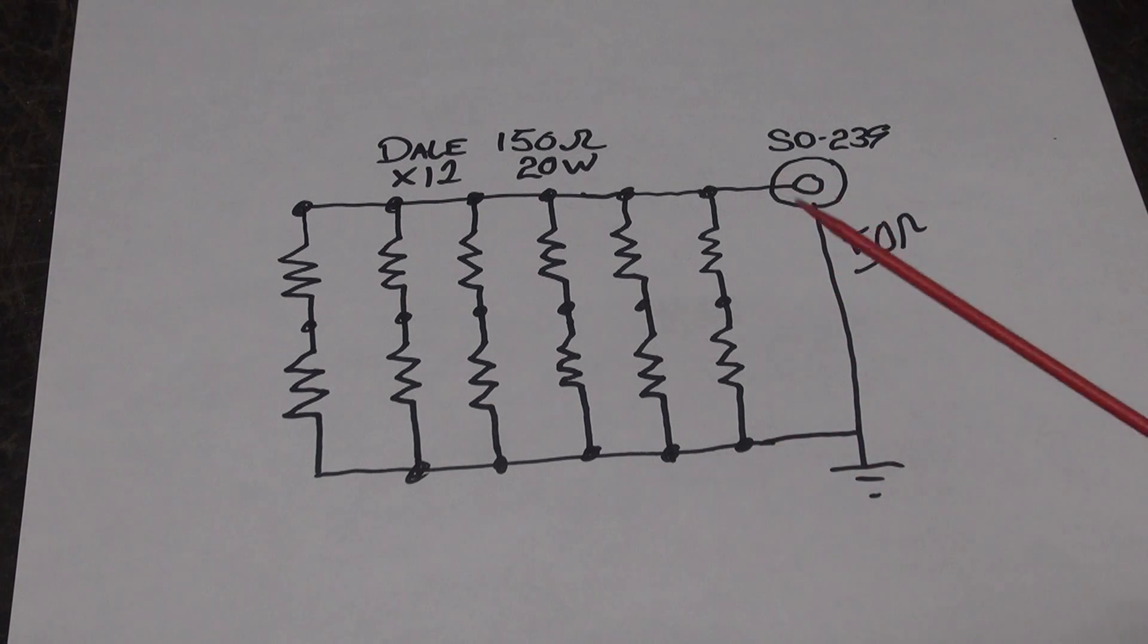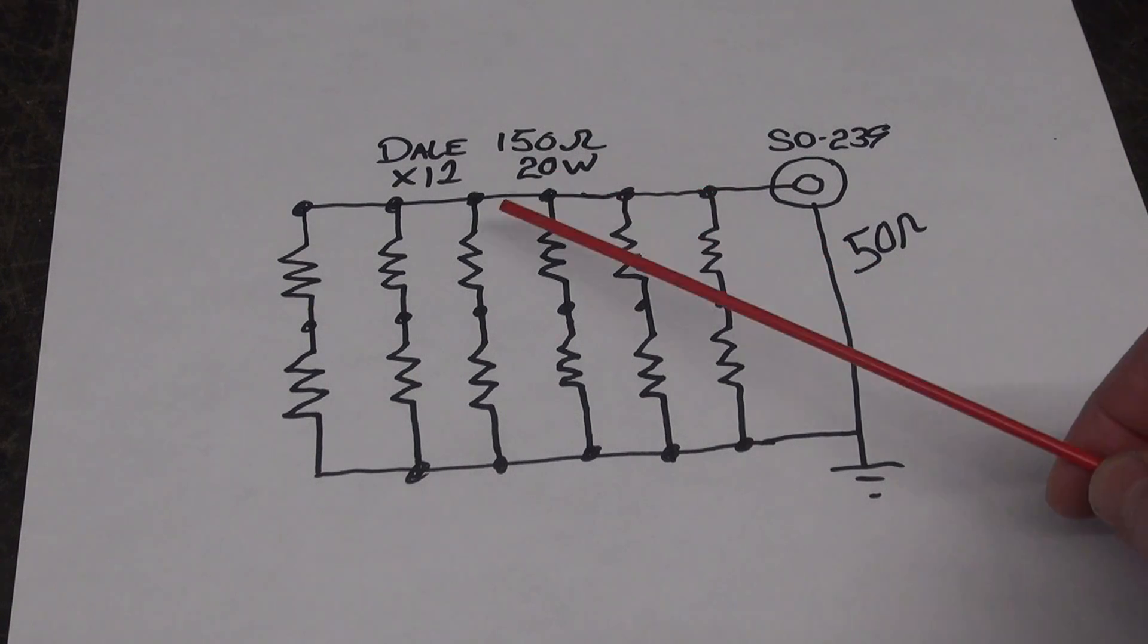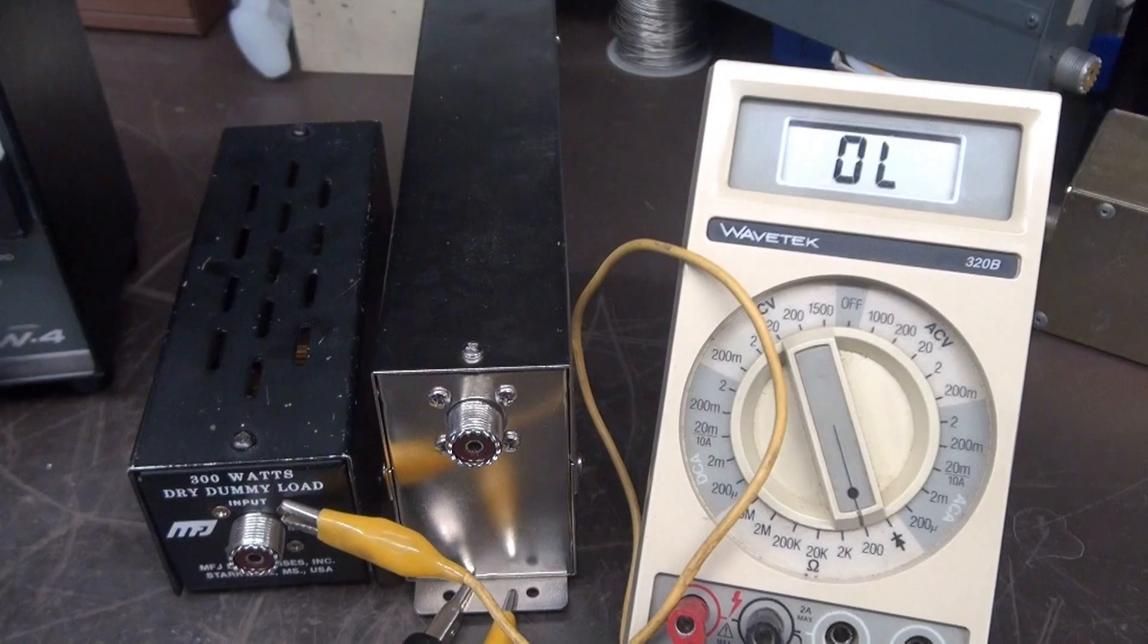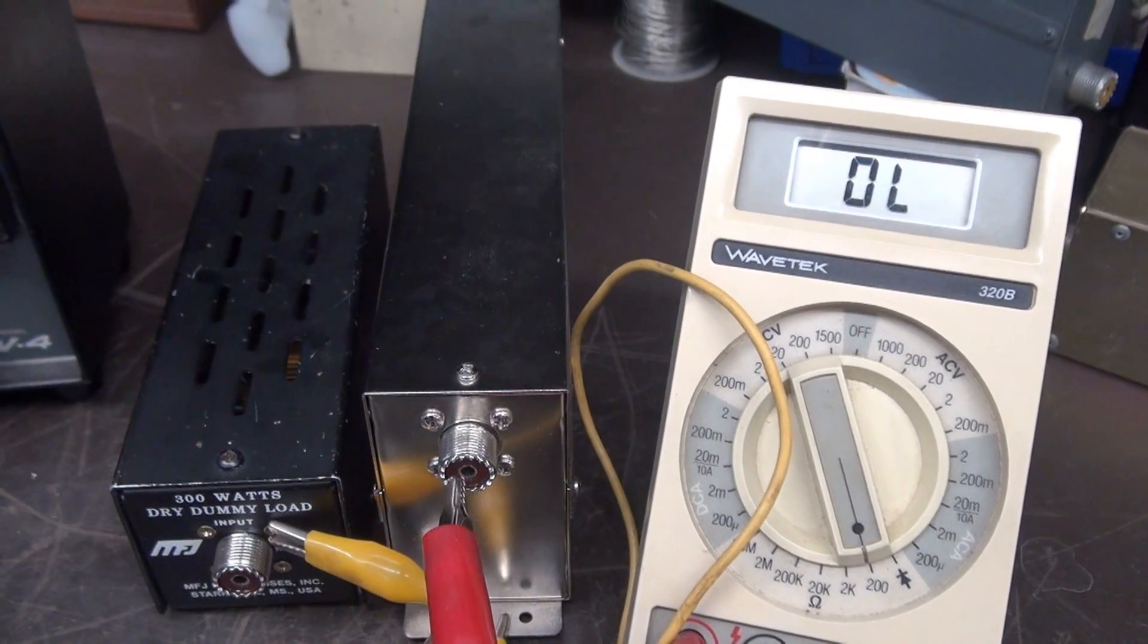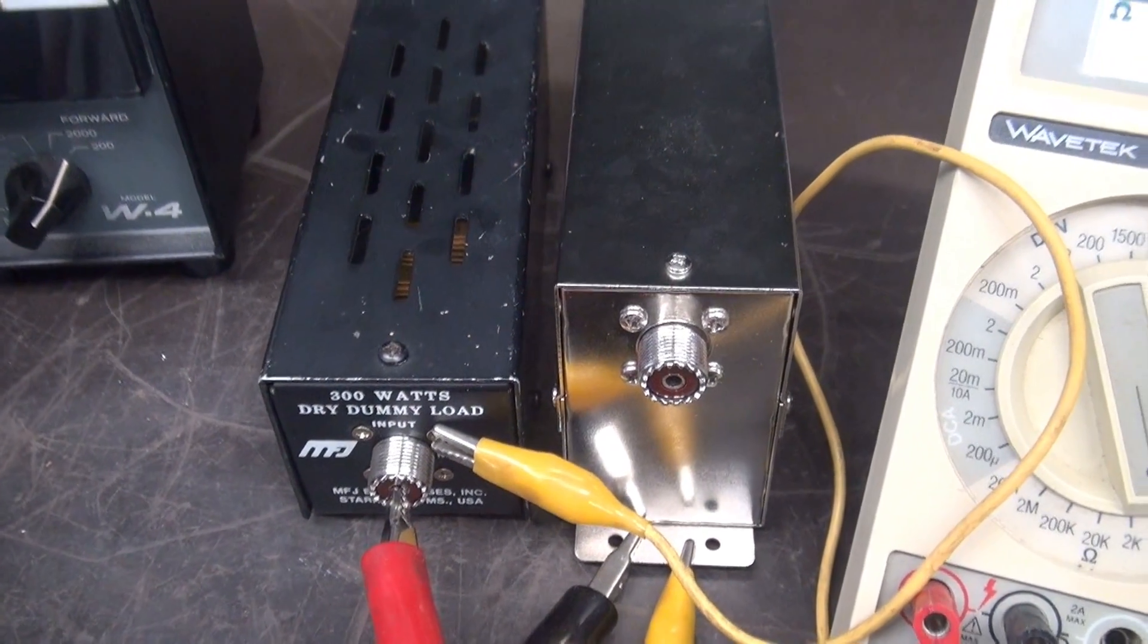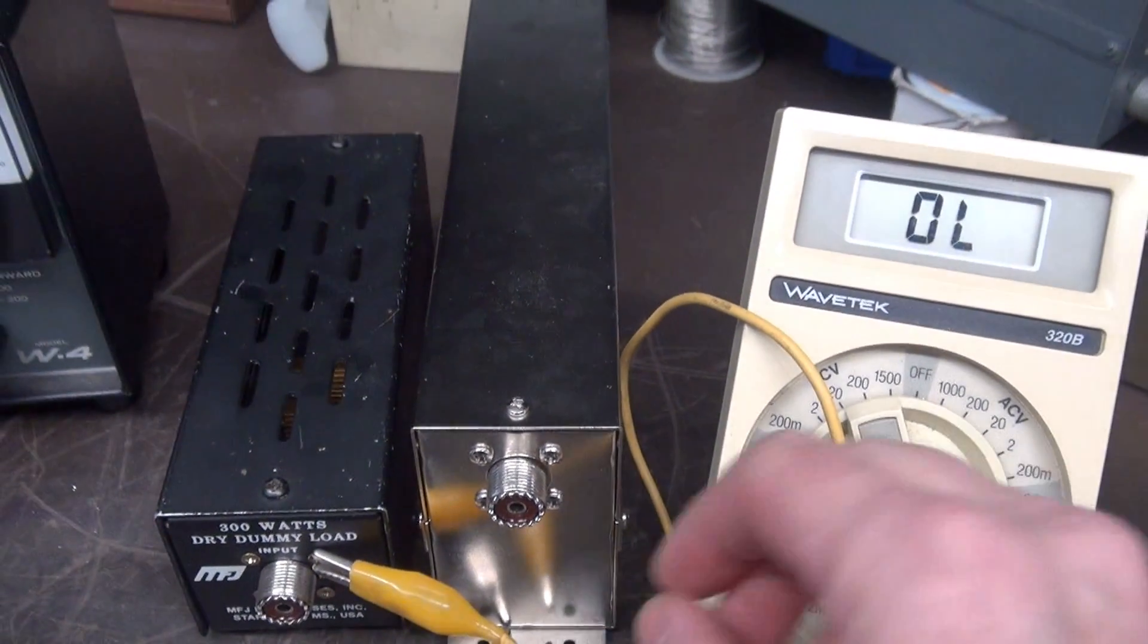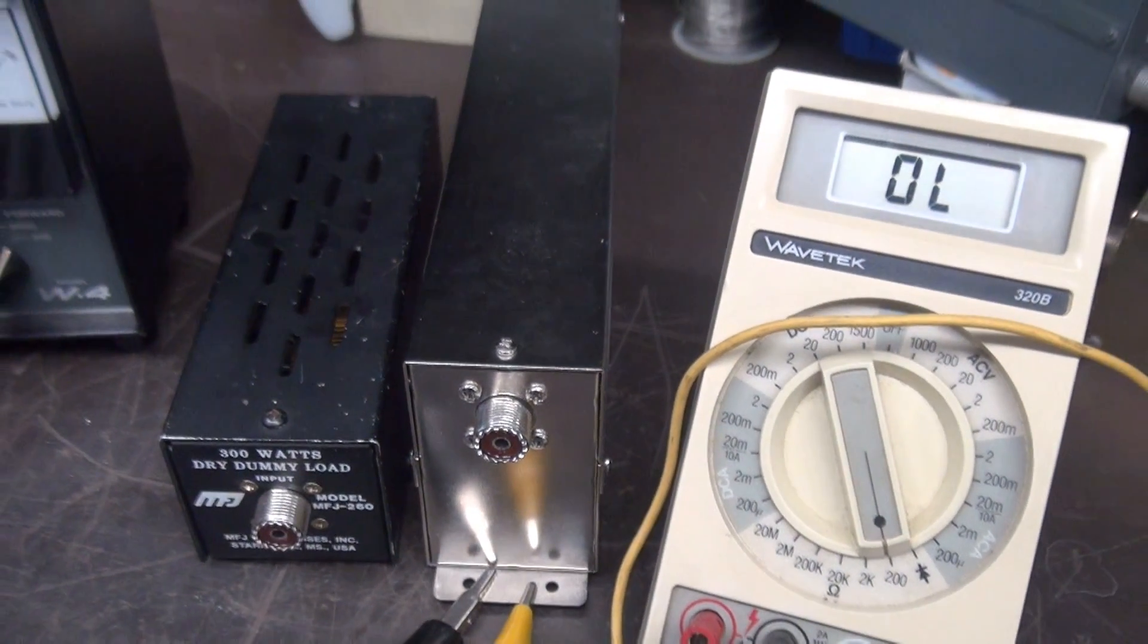And then of course the MFJ, it only has three of the 150 ohms in parallel to give me the 50, and of course it's much lower power. Either way you get the idea. Real quick, let's go ahead and check the resistance of the dummy loads. So there's the big guy, 49.1, and here's the rebuilt MFJ, 49.5. So they look good, no shorts, let's hook them up to a transmitter.